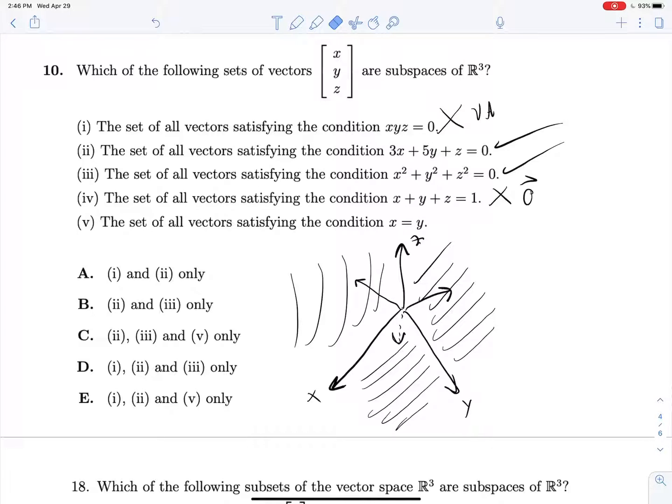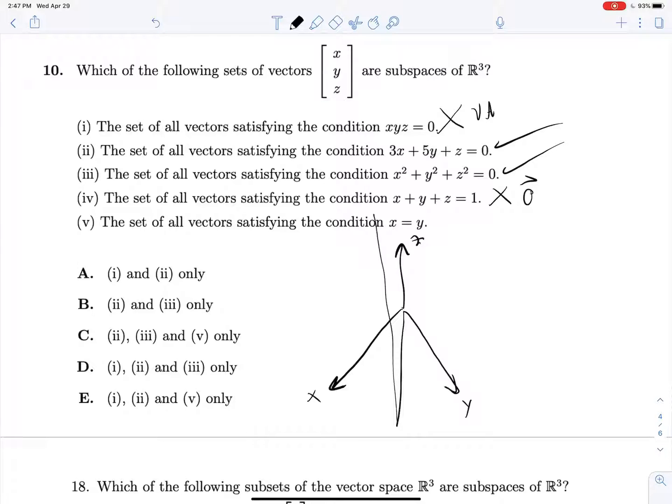And then what about 5? We have all vectors satisfying the condition x equals y. Well, what's that going to look like? That's just going to be... I've kind of messed up my perspective here. It's not going to look too great, but it's a plane. It's a plane that is unbounded on z, so it just goes wherever it wants on z.